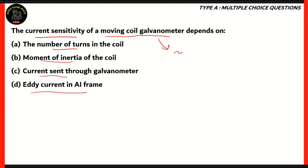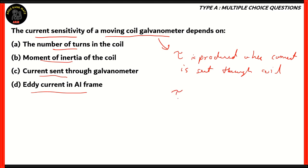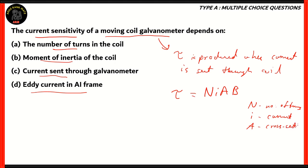In this moving coil galvanometer, torque is produced when the current is sent through the coil. The torque produced is represented as N × I × A × B, where N stands for the number of turns, I stands for current through the coil, A stands for cross-sectional area, and B stands for magnetic field strength. This is how you represent torque — let's mark this as equation one.